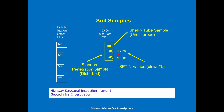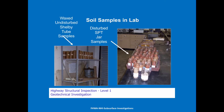Outside the core sample, the N value at one elevation is 20, and five feet down it's 35 — telling you the soil is more and more dense the further down you go. Here's what the samples look like in the lab before testing: waxed undisturbed Shelby tube samples, and disturbed SPT jar samples.